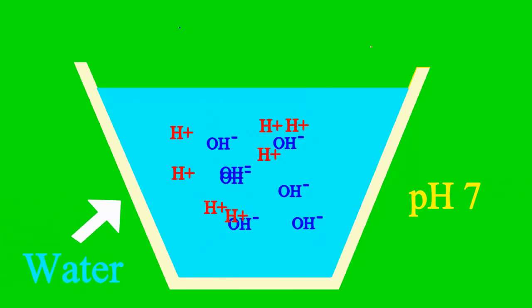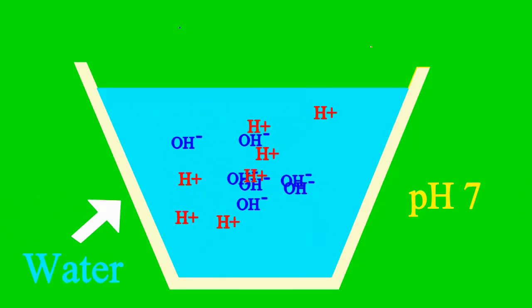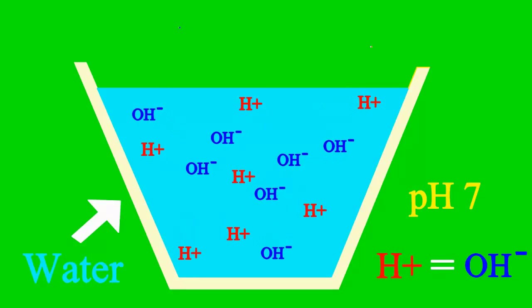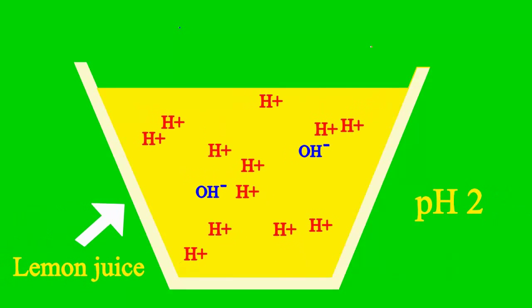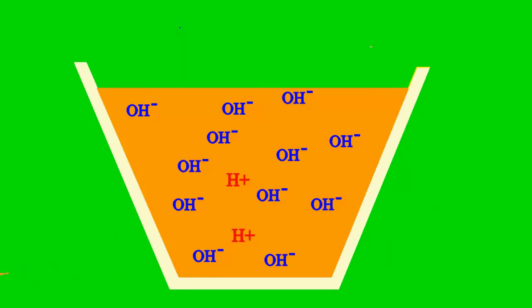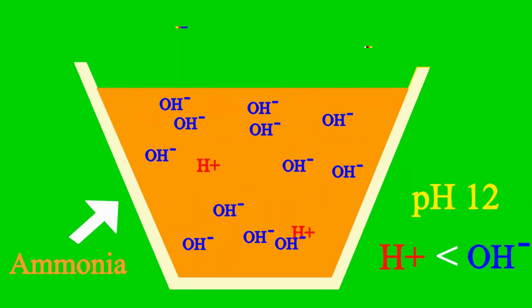When the pH is 7, the sample is neither an acid nor base. Less than 7 is an acid, more than 7 is a base all the way.